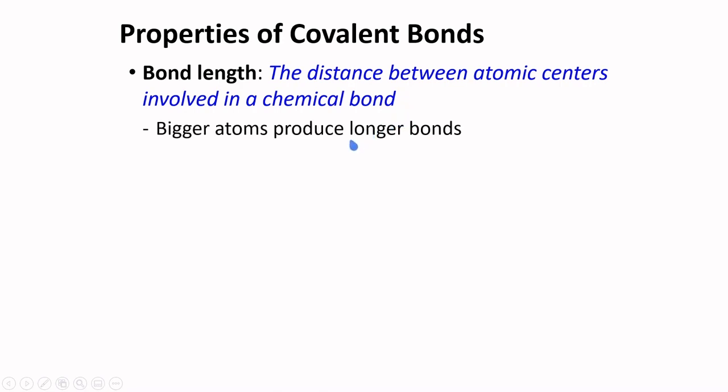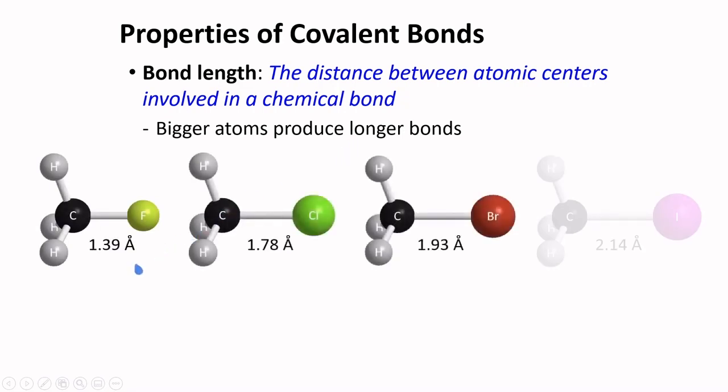Bigger atoms produce longer bonds. If we are to compare the bond of carbon with halogens such as fluorine, bromine, and iodine, we will notice that as we go with increasing atomic size, the bond length also increases.